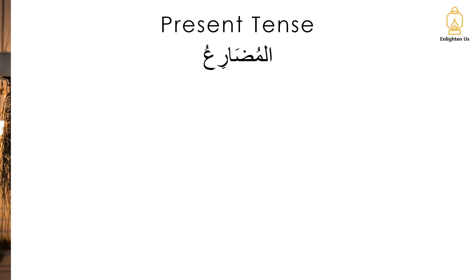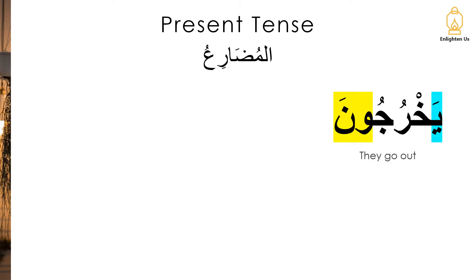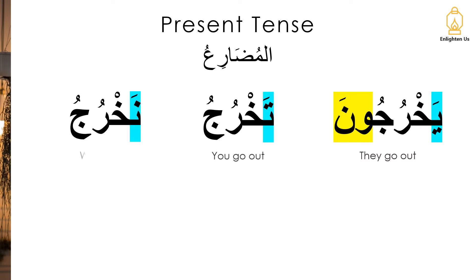Now let's have a look at a selection of words. We've got يخرجون، تخرجوا، نخرجوا. What you'll notice about these words, similar to when we looked at the past tense, is that we have letters that are consistent. So the خ، the را، the جيم is consistent across all three words.